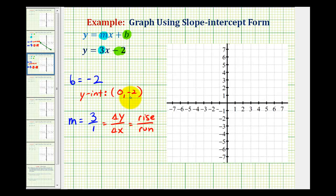So with this information, we can now graph the line. We'll first plot the y-intercept of negative 2 here, and then from this point, we'll use the slope to find additional points on the line.